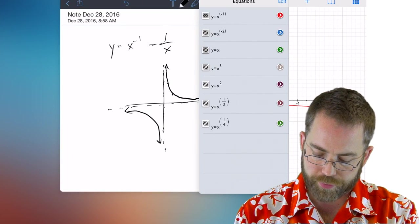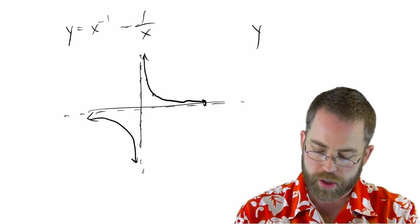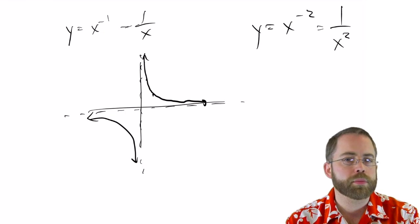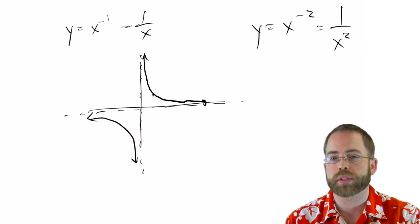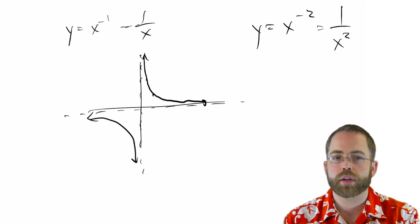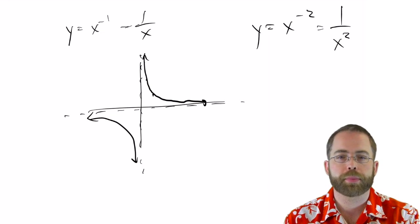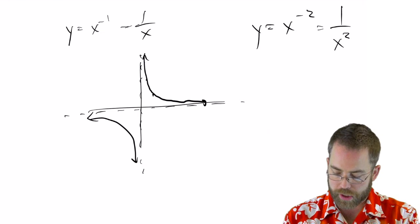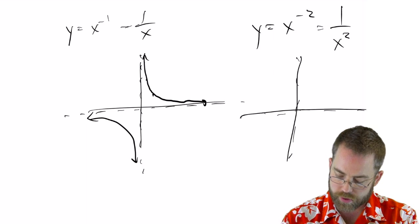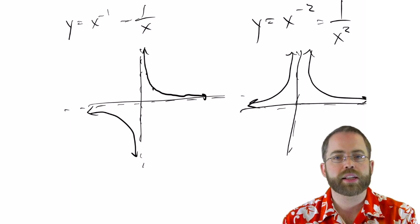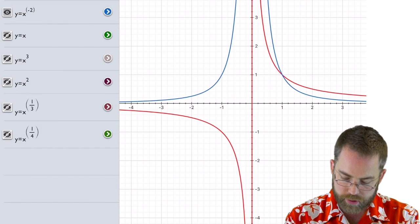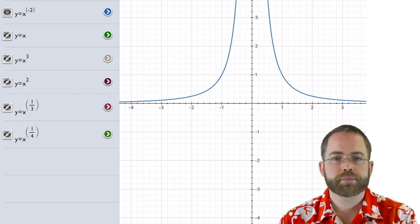So what would happen if we had a different exponent? What would happen if we had y equals x to the negative 2? Well that would be 1 over x squared. And you remember what squaring does—what any even exponent does is it makes you always positive. Because if you have something squared, a negative times a negative is positive and a positive times a positive is positive. So it's always going to be positive. We're going to end up with essentially the same graph with the same asymptotes except that left side gets flipped up and gets forced to be positive as well.